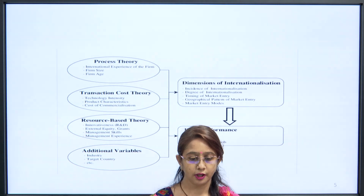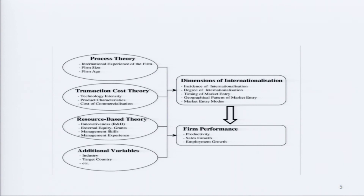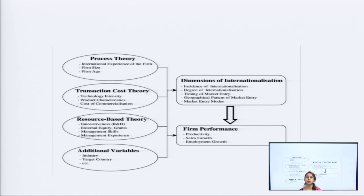Transaction costs include technology intensity, product characteristics, and cost of commercialization. For all these purposes, some cost will be included. The R&D wing of a company is always a very costly affair because continuous upgradation needs updated technology and upgraded machines, which are very costly. This cost needs to be understood when we talk about internalization theory.